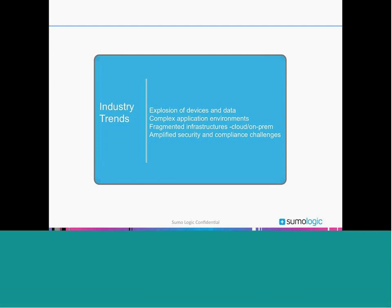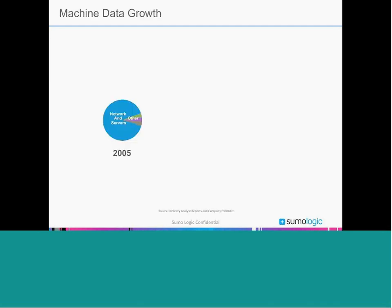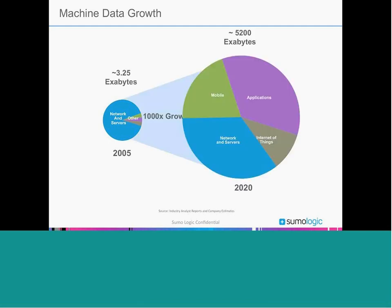The reality is, as Dennis pointed out, application environments are getting highly complex — driven primarily by the explosion of mobile apps and devices, the Internet of Things, and that fragmented infrastructure Dennis alluded to. That makes the challenge of understanding what's happening in your infrastructure that much more difficult. If you just look at how much data is getting generated across different data sources, it's 1000x growth across typical infrastructure. Almost ten years ago the bulk of data was generated from your network and from servers — now it's much more fragmented, with application growth and mobile growth, and certainly networks and servers still constitute a significant chunk.